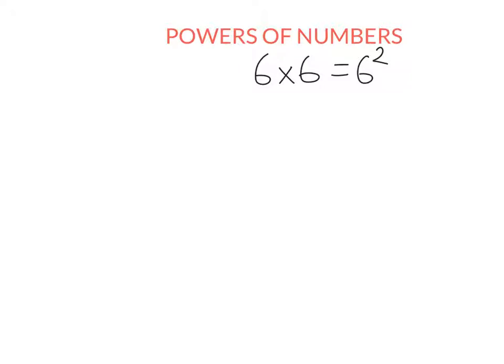6 with a small 2. So, the larger number here we call the base. And the smaller number, it's written at the top but it's written smaller. That number is called the power. It's also called the exponent or the index. It really doesn't matter which of these words you use. Power, exponent or index. I'm just going to stick to power.